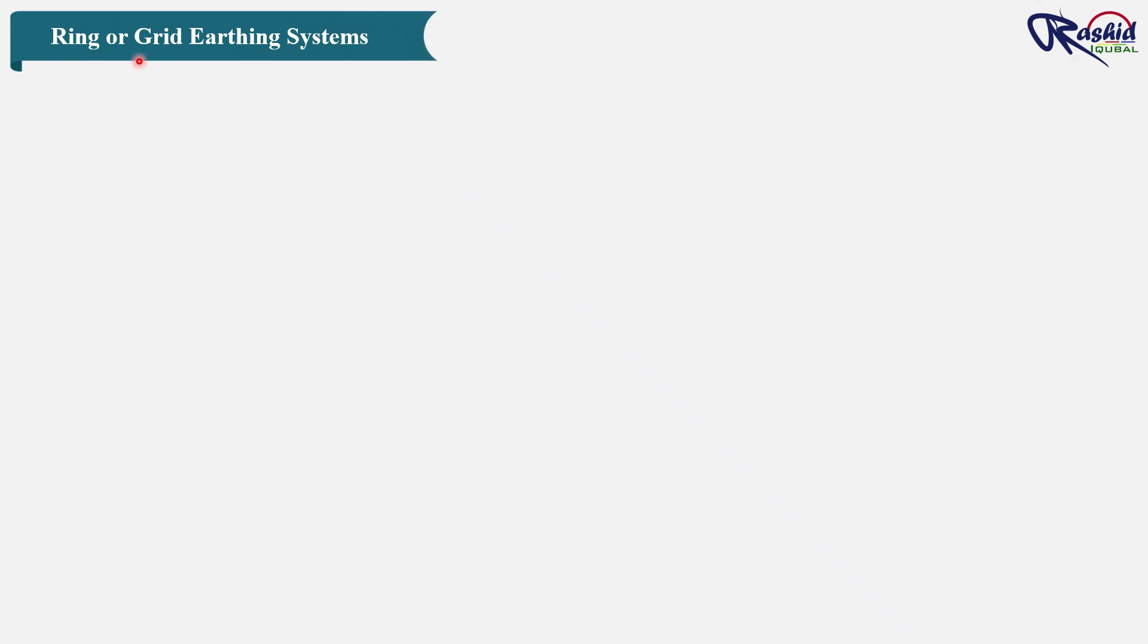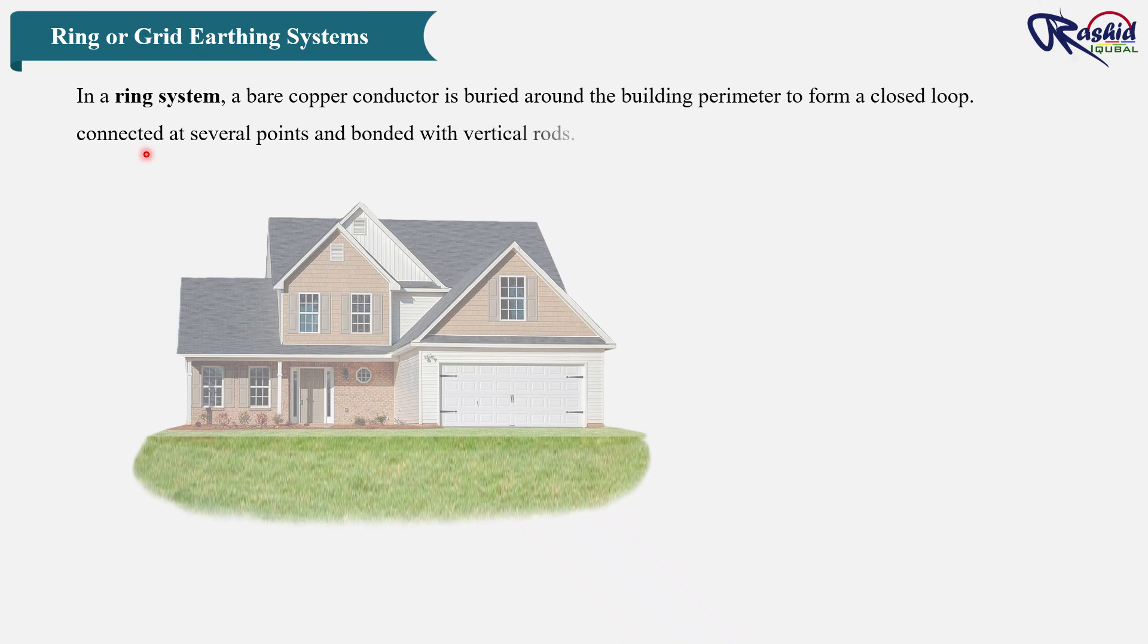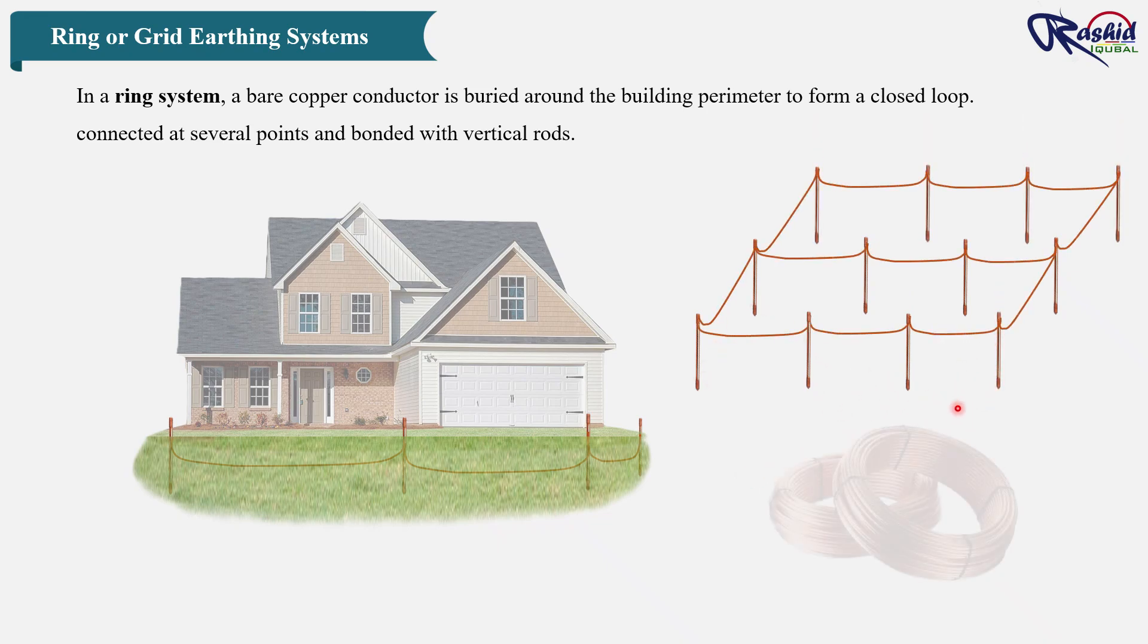Ring or grid earthing system. For large commercial or industrial buildings, we often use ring or grid earth systems. In a ring system, a bare copper conductor is buried around the building perimeter to form a closed loop. For better performance, a grid of conductors is laid under the soil, connected at several points and bonded with vertical rods.